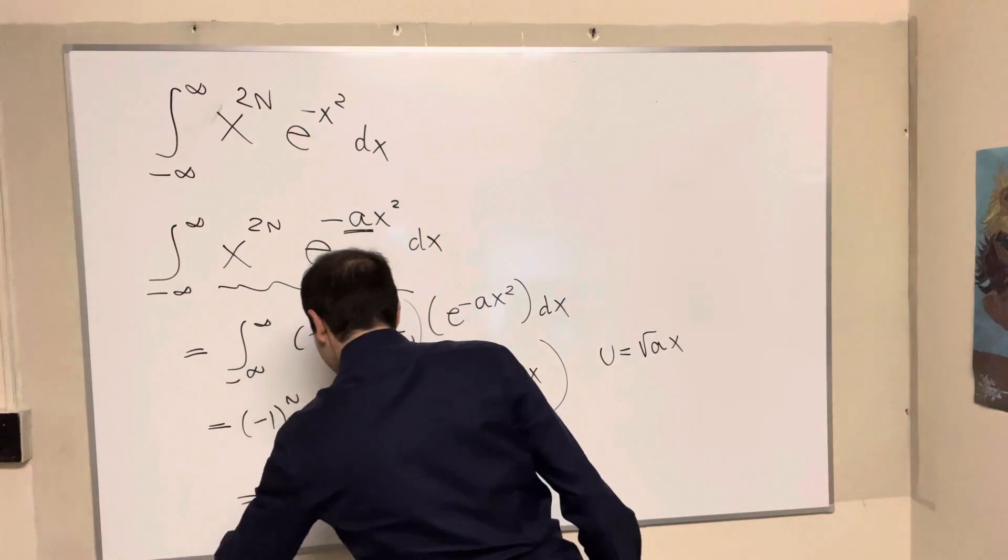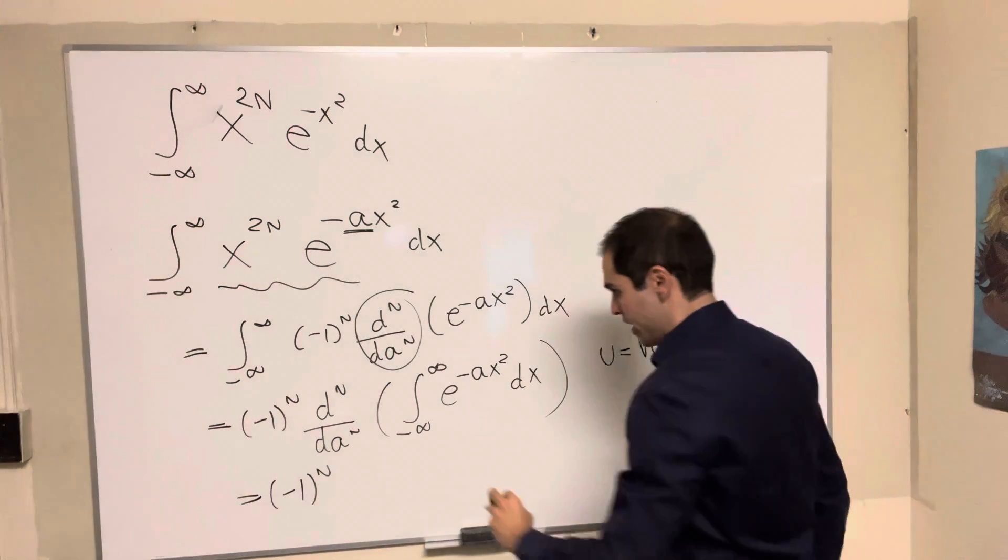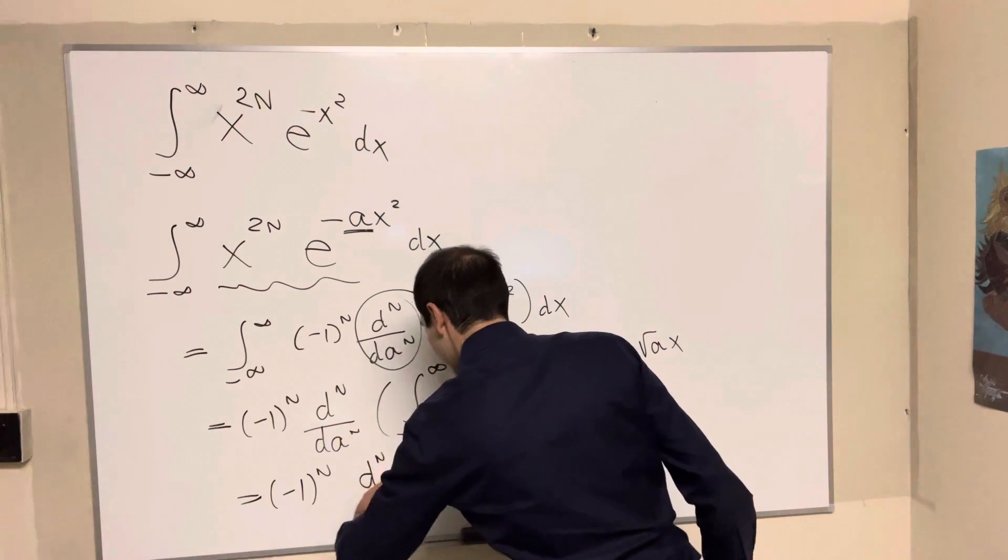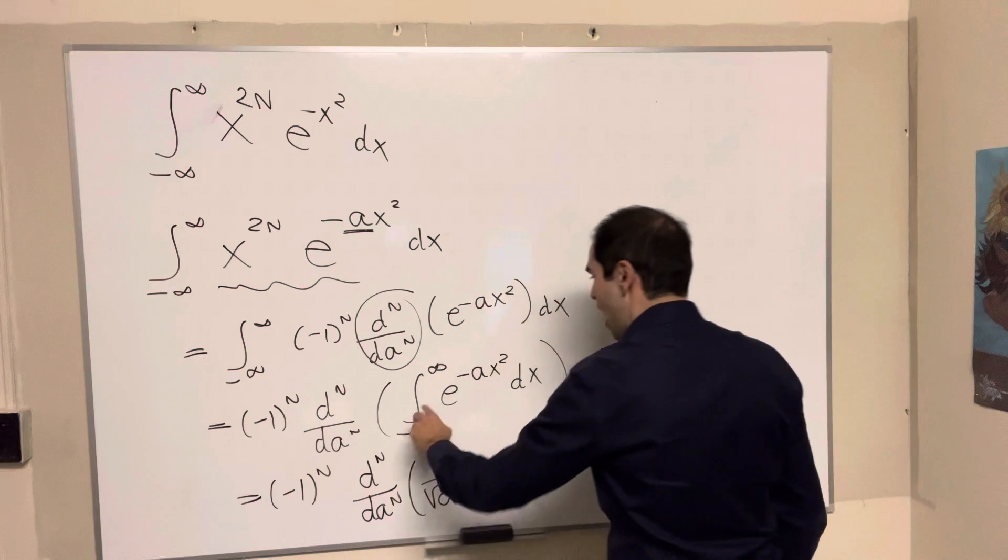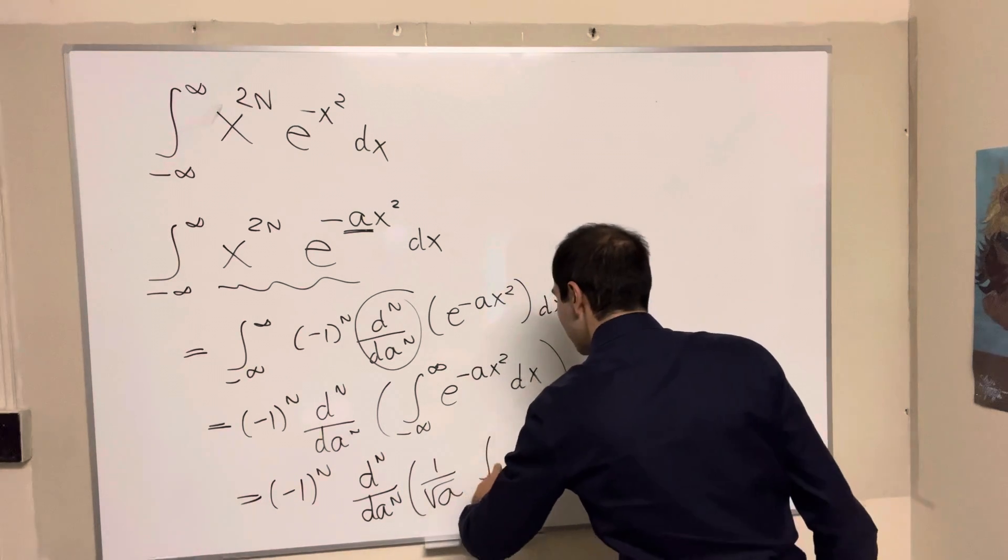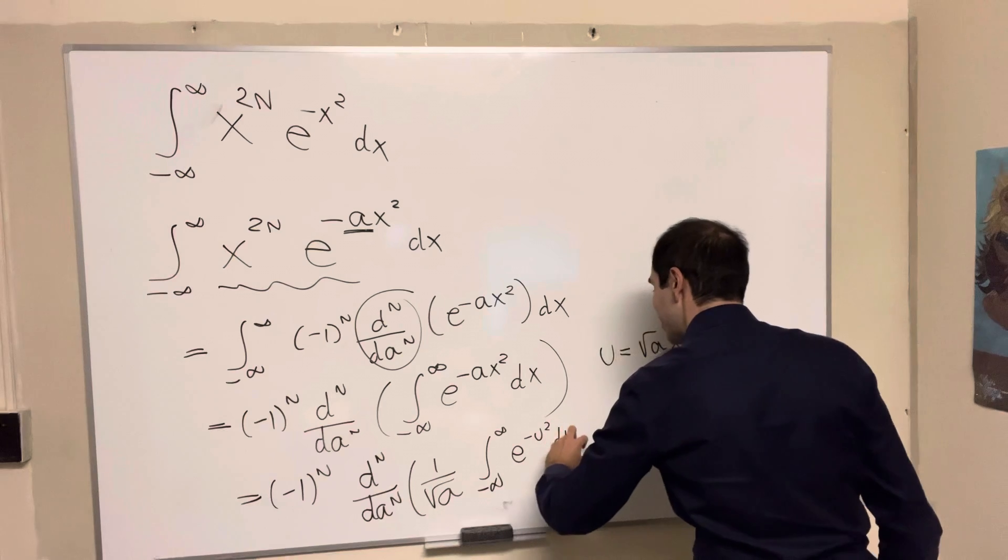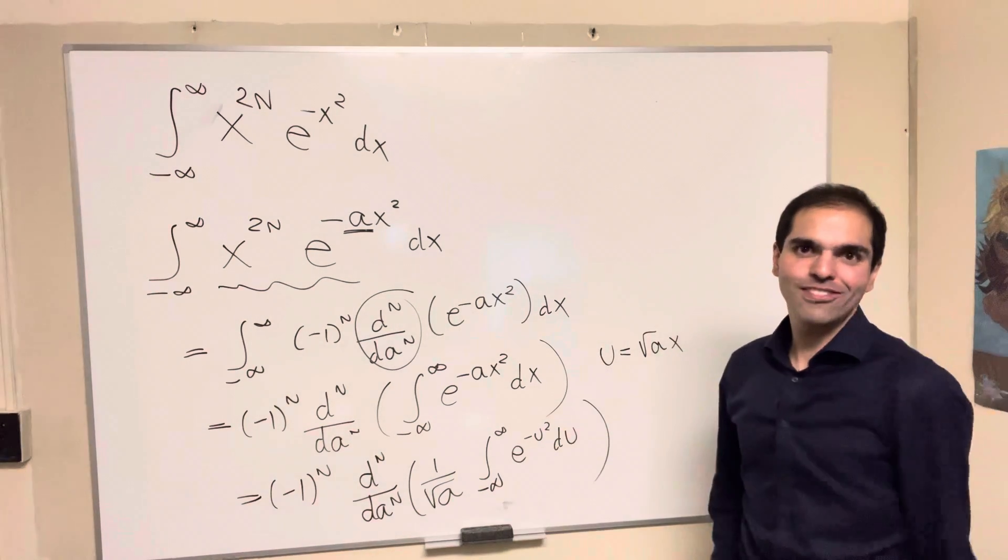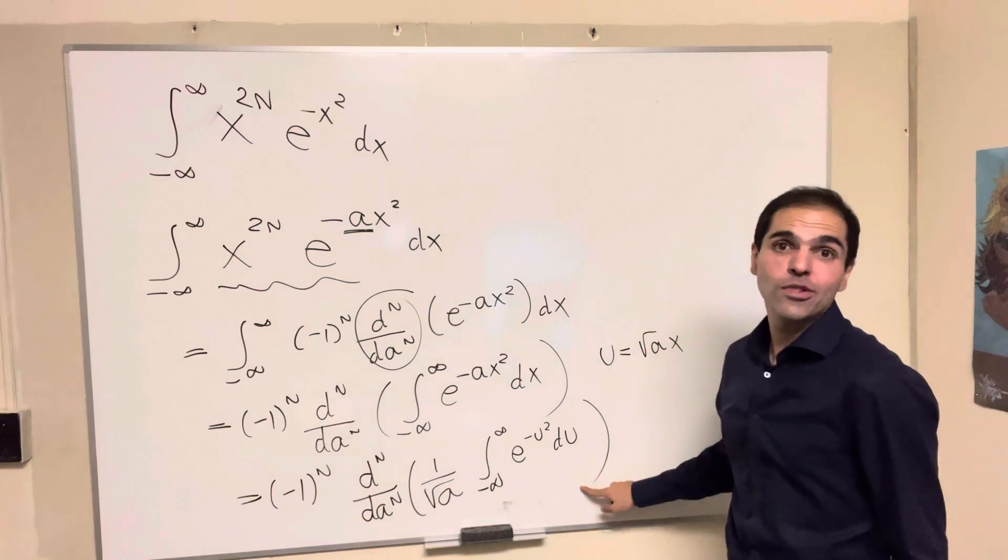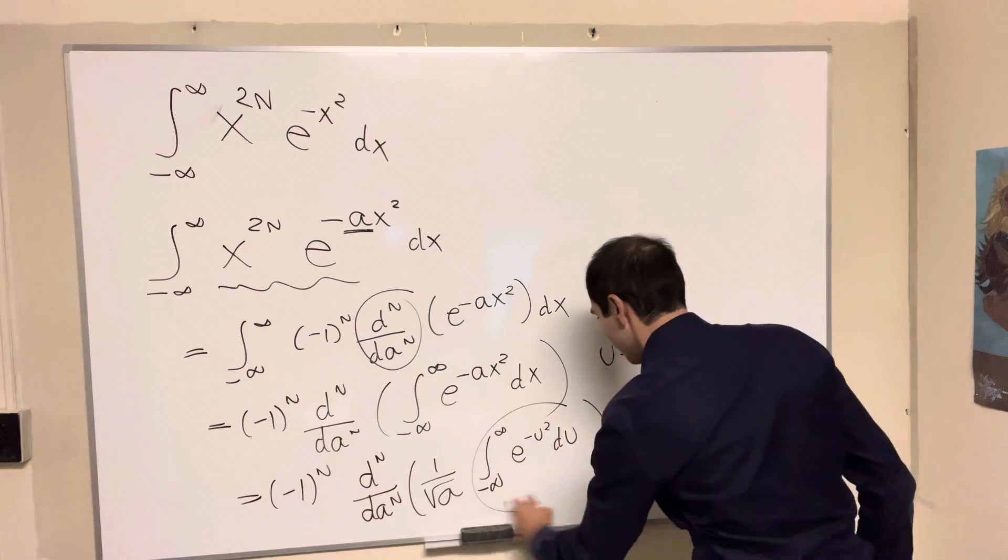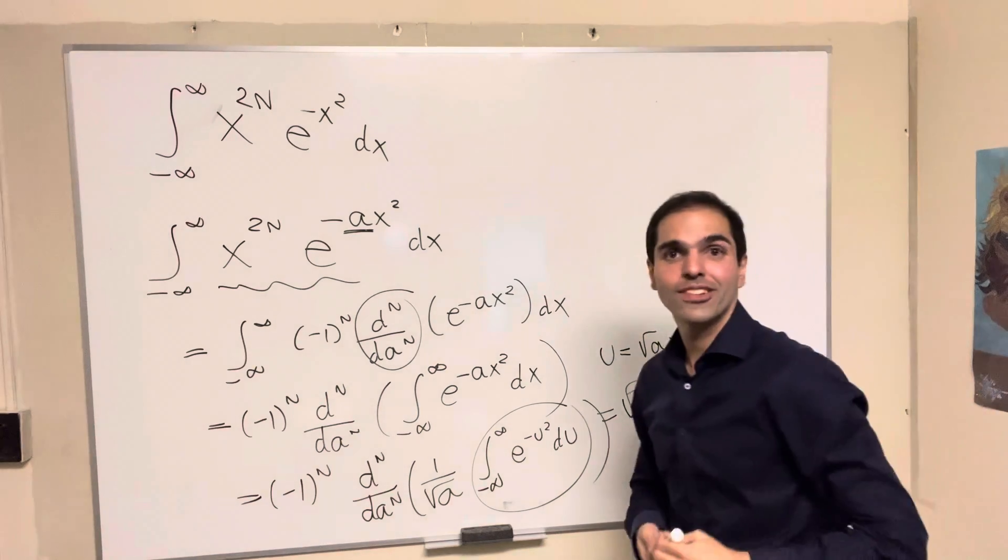And if you evaluate this, this becomes minus 1 to the n, this 1 over square root of a, so the nth derivative of 1 over square root of a, and the integral from minus infinity to infinity of e of minus u squared du. And I totally forgot to wear my Gaussian integral shirt, but this thing here is square root of pi.